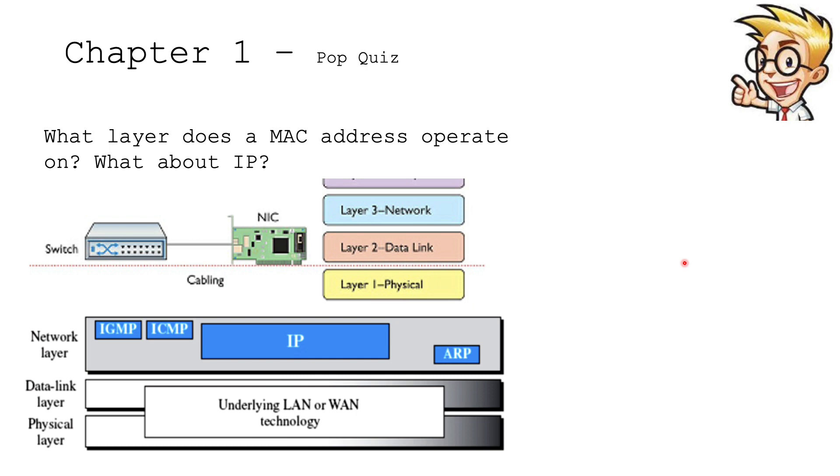Next question. Question number two. What about a MAC address? What layer does a MAC address operate on? And what about IP? MAC addresses are tied to the NIC that we were seeing earlier. The NIC and the switch and the cables operate at layer 2 and 1. IP is a bit more intelligent. Once it actually gets inside of a network and it knows what IP address to send it to, because we don't just function on MAC addresses only. That's important at layer 2. But at layer 3, it's a totally different game.